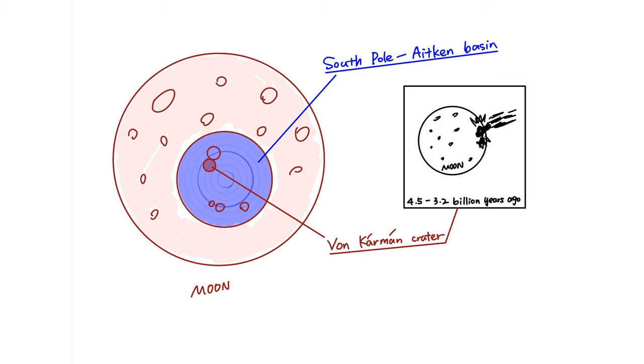This is a crater formed around 3.2 to 4.5 billion years ago and believed to be the largest, deepest and oldest impact structure on the moon.